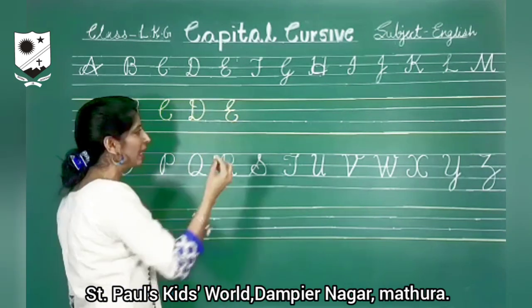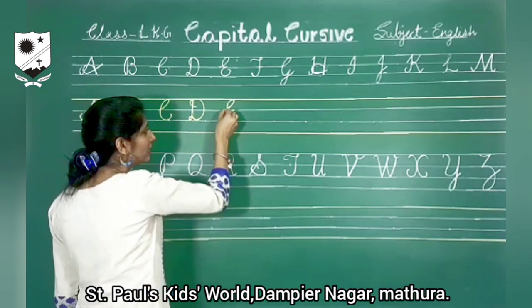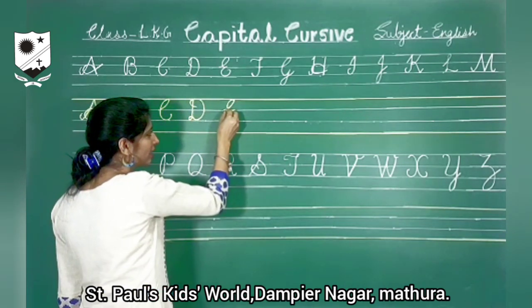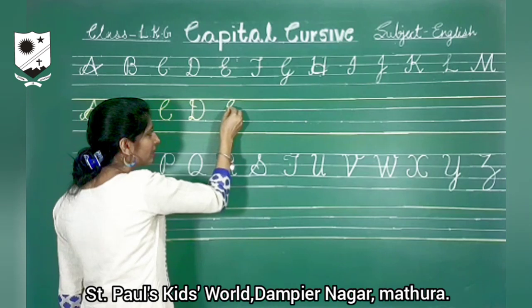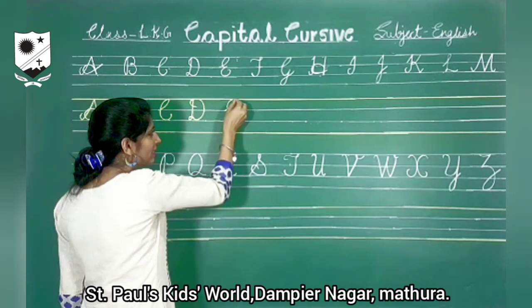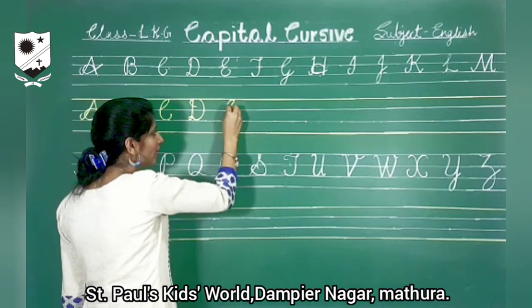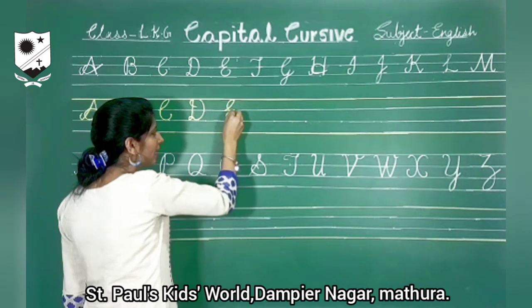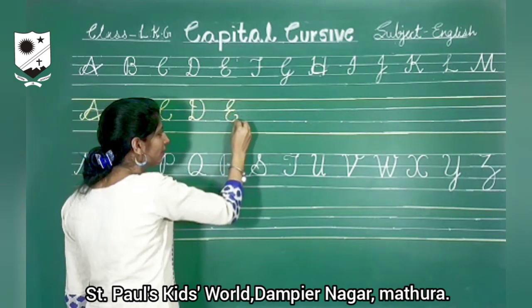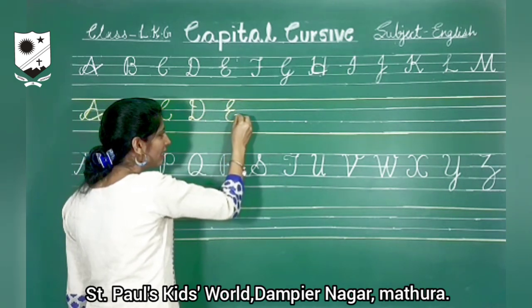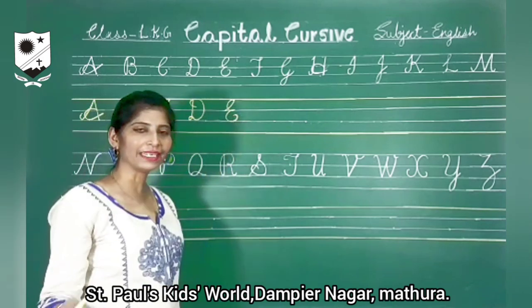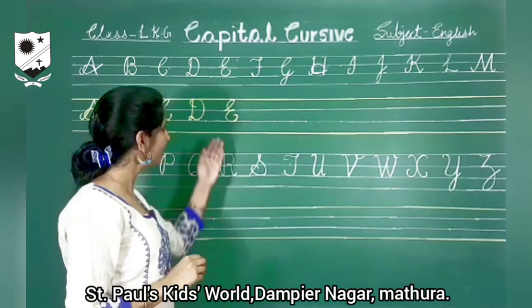Now capital D, start from the second line. Take this curve up. Make a loop. And then again curve. Look here. And then leave it. Capital D.